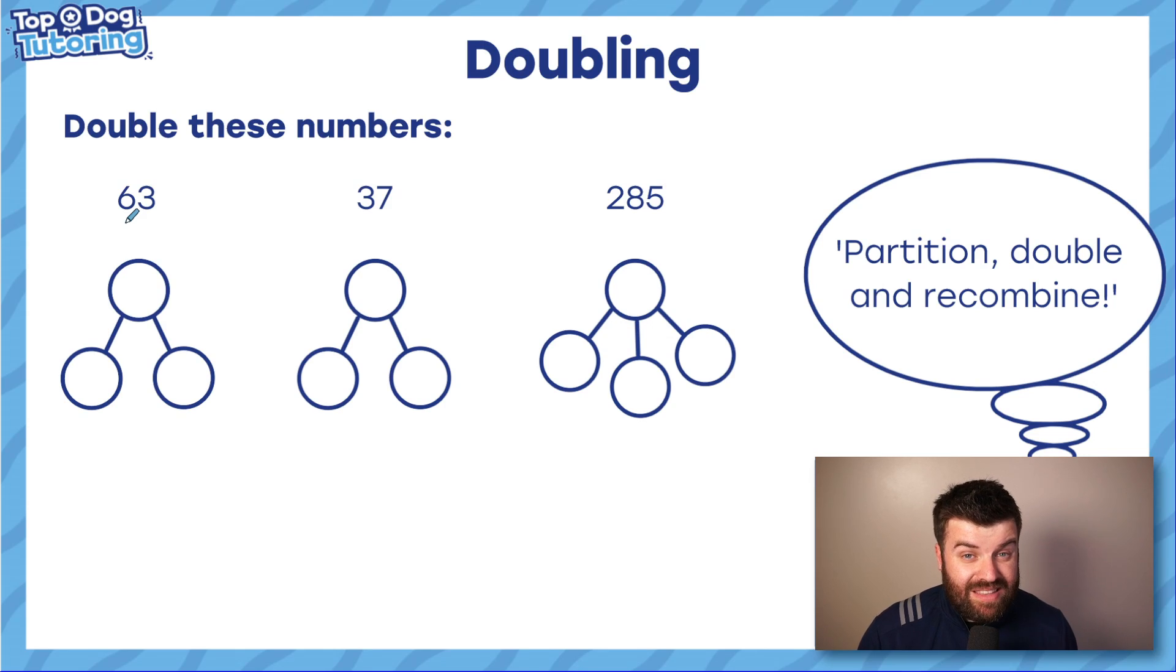How do we double these numbers here? So double 63, you should be thinking of partitioning them. So let's put 63 into our part, whole model. We're going to partition the six out. It's not just six and three. We know that. It's six tens. So this is actually 60. Now we just have to use our facts from earlier. Double three is six. Double 60. Well, I know double six is 12. So double 60 is 120. Add them up and we get 126.